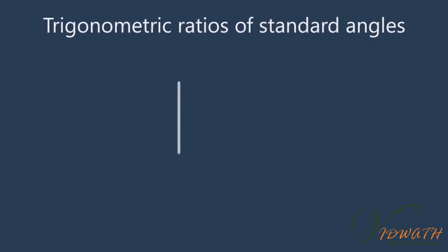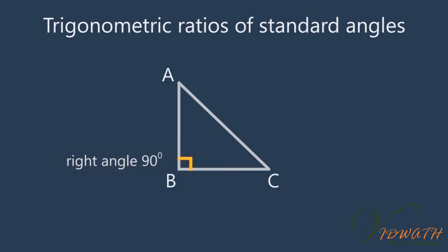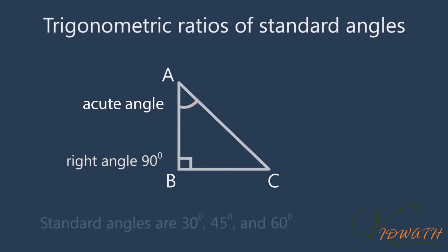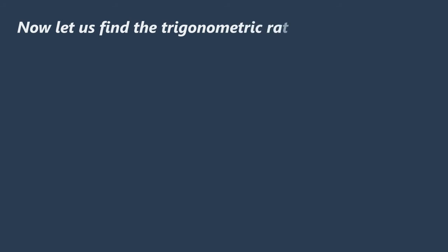Trigonometric Ratios of Standard Angles. In this chapter so far, we have been discussing Trigonometric Ratios of a Right Angle Triangle for an acute angle. The triangle has a right angle equal to 90 degree, and an acute angle can be anything less than 90 degree and greater than 0 degree. But in standard angles, we quite often construct and use 30 degree, 45 degree, and 60 degree angles. Now let us find the trigonometric ratios for these angles.